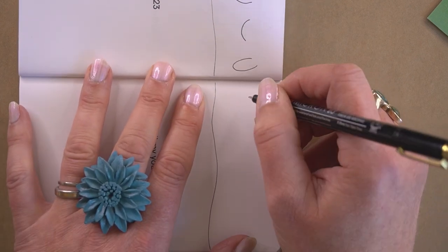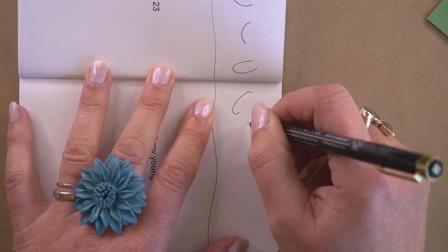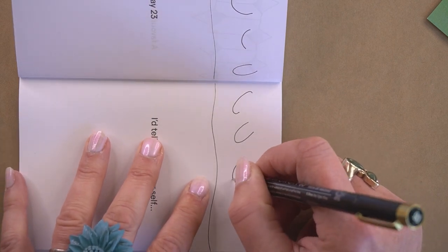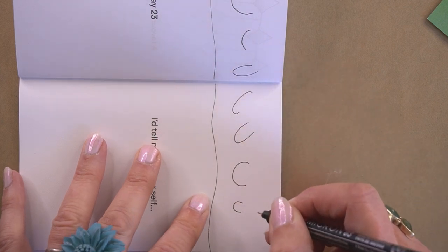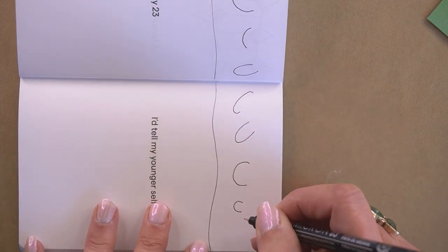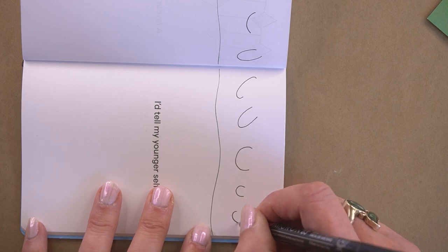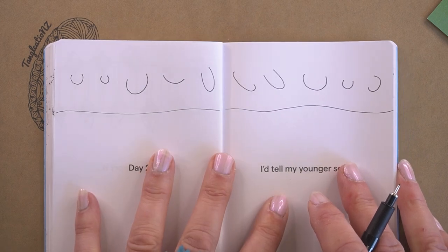They might be slightly flat, they might be quite deep. Each time you draw a C just draw it at a slightly different angle or a different curve as we're following along beside our line here. See how many different ways you can draw your C, even deep angled.